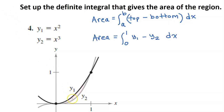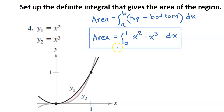The enclosed region starts at an x value of 0 and ends at an x value of 1. Notice that y1 is the top function and y2 is the bottom function. So the area will be the integral from 0 to 1 of y1 minus y2, the top function minus the bottom function. Let's substitute in the actual functions for y1 and y2. They only asked us to set up the definite integral, so this is the answer to number 4.